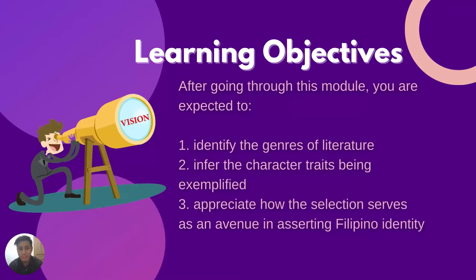Let's go now first with the learning objectives. After going through this module, you or the students are expected to: number one, identify the genres of literature; number two, infer the character traits being exemplified; and number three, appreciate how the selection serves as an avenue in asserting Filipino identity.